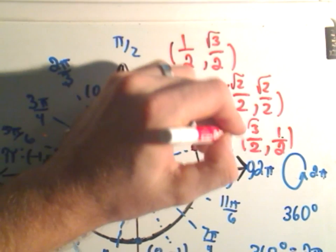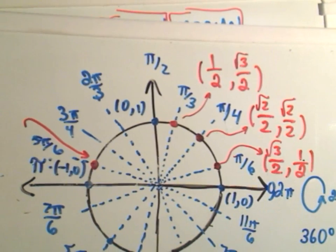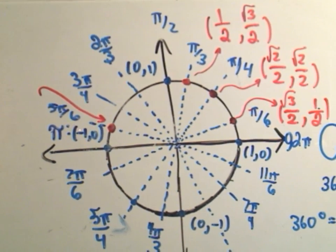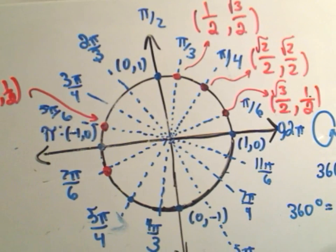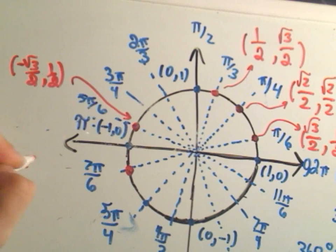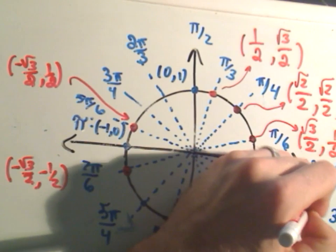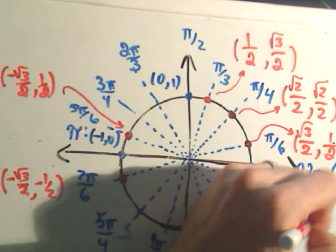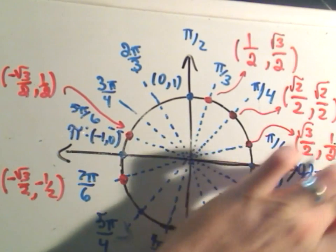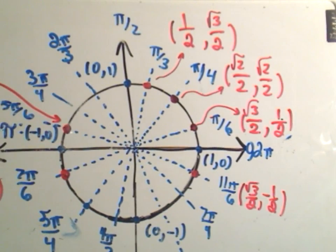The point on the unit circle for π/6 is (√3/2, 1/2). To get the others: at 5π/6 only the x-coordinate becomes negative, so it's (-√3/2, 1/2). At 7π/6 both are negative: (-√3/2, -1/2). Back over at 11π/6 the x-coordinate is positive again: (√3/2, -1/2). Now we know all the values for the denominators of 6.